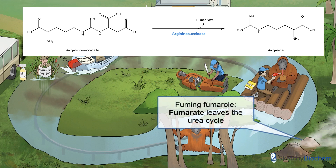Fumarate flees the urea cycle, finally free forever — but no, it just enters the TCA cycle. Round and round and round it goes, cycle after cycle, time upon time. Bleak it is indeed to be fumarate.